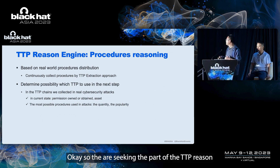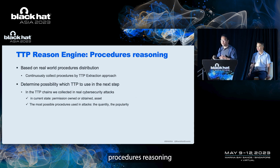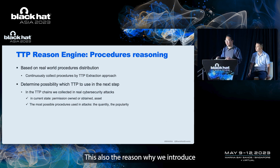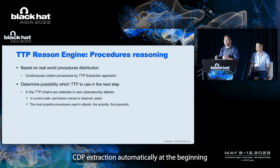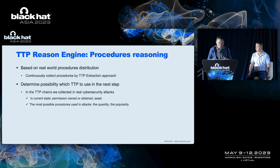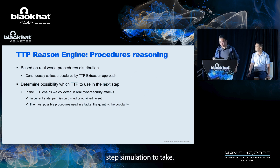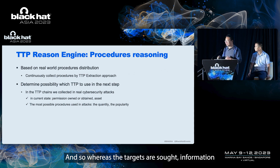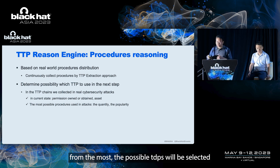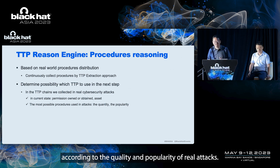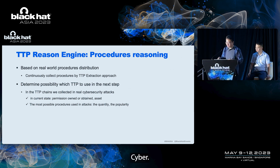The second part of the TTP reasoning engine is about procedure reasoning, which is based on attack reports from real-world incidents. This is also the reason why we introduced automatic TTP extraction at the beginning. According to the permissions obtained in the previous simulation step, as well as target asset information, the most appropriate TTP playbooks are selected from the knowledge graph based on the quality and popularity of real-world attacks.